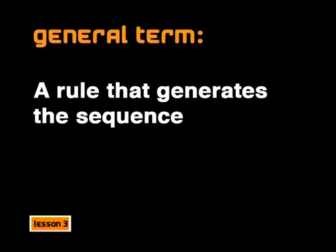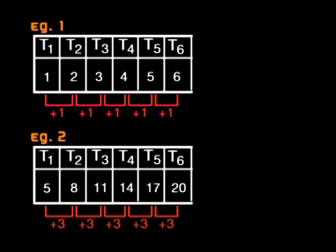Now that we have established what an arithmetic sequence is, I would like us to go back and look at the general term of the sequence again. The general rule of the sequence is a rule that generates the sequence. We want to develop a general term for each of the sequences we've looked at, and then develop a general term for all sequences of this type. To help us, I have numbered the terms in the sequences.